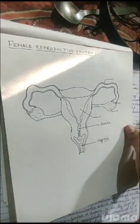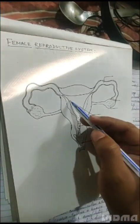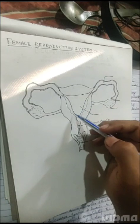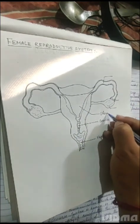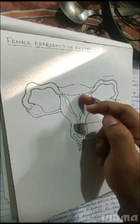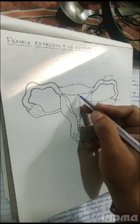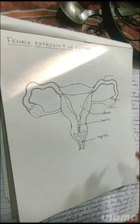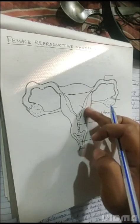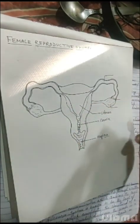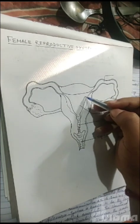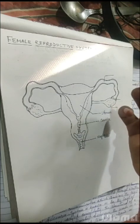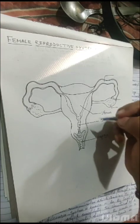After the cervix, you have a hollow pear-shaped structure called the uterus. This whole part — from here to here — is called the uterus, and these are the uterine walls. Moving to the upper part, we are following the pathway of the sperm going for fertilization.